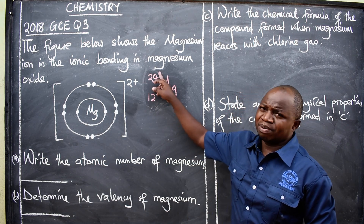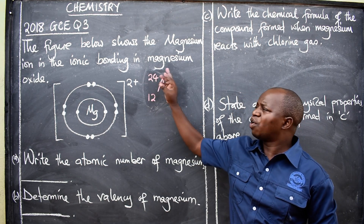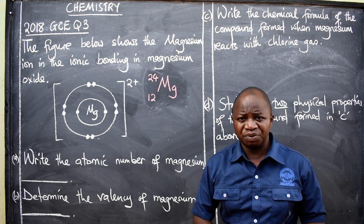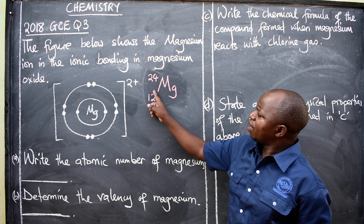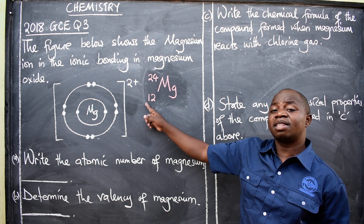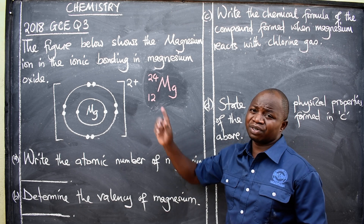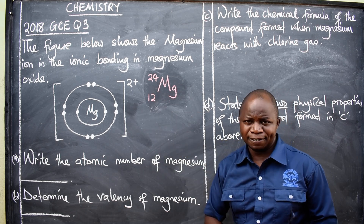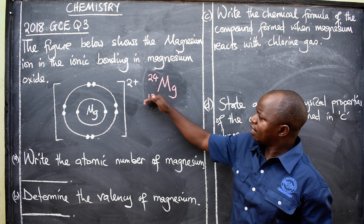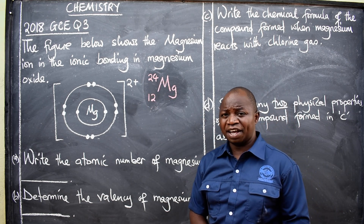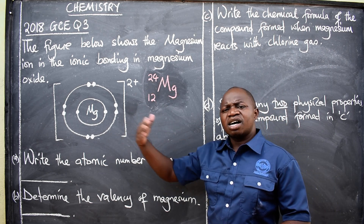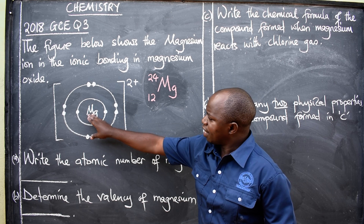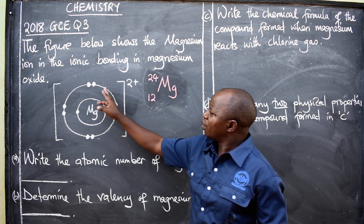The number on top is the mass number of this element, also called the nuclear number. The bottom number is the proton number, also called the atomic number of this element. These are the two numbers you'll find on the periodic table for any element, and we'll discuss them in detail as we move step by step.